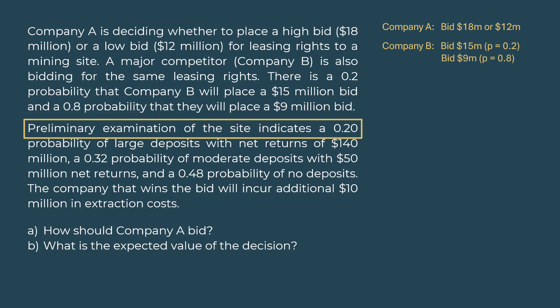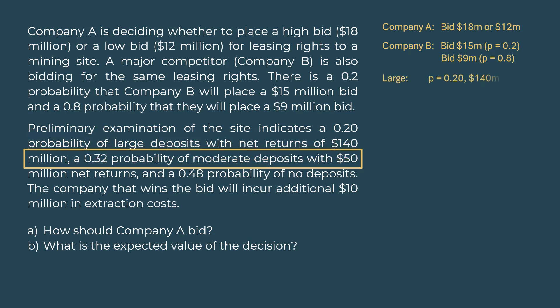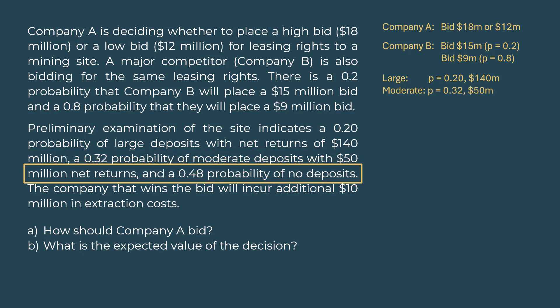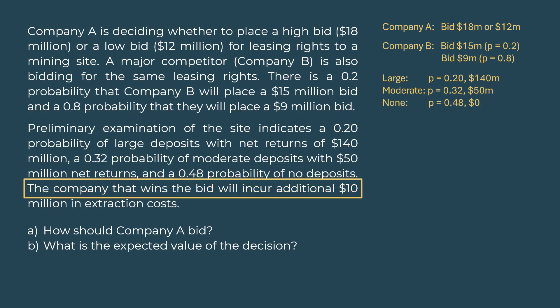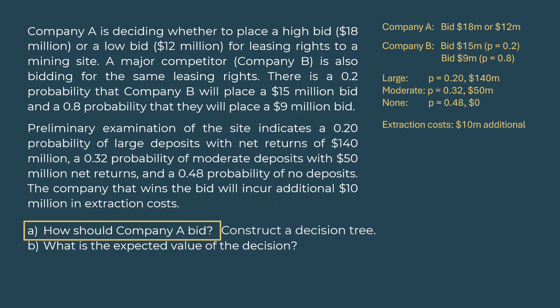Preliminary examination of the site indicates a 0.2 probability of large deposits with net returns of $140 million, a 0.32 probability of moderate deposits with $50 million net returns, and a 0.48 probability of no deposits. The company that wins the bid will incur additional $10 million in extraction costs. How should Company A bid? What is the expected value of the decision?